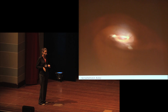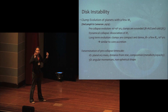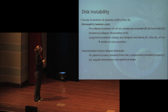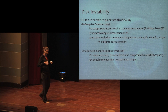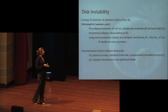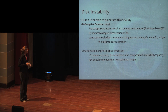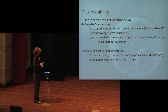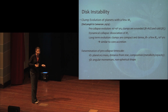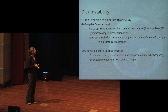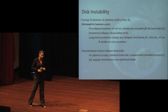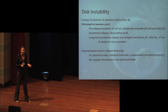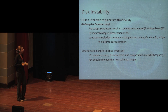If a fragment forms in disk instability, it has three stages of evolution. Initially, the pre-collapse stage: the clump is very large, radii around AU, very cold — molecular hydrogen. After some time, dissociation of molecular hydrogen occurs, there is a collapse, and then long-term evolution of the planet, similar to the core accretion model. There are 1D simulations of this evolution where more physics like composition, metallicity, and opacity can be added, and also 3D simulations accounting for non-spherical clump shape and angular momentum.